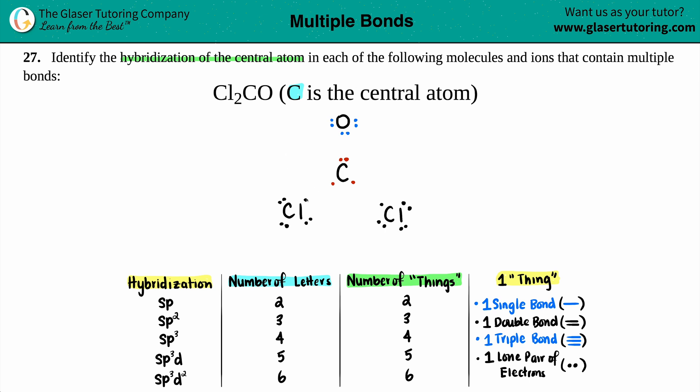We always single bond them first. So dot to dot, dot to dot, dot to dot, and just see if the outer elements have the octet. Chlorine's good. Two, four, six, eight. That's the octet rule. Got to have eight electrons. This chlorine's good. Two, four, six, eight. But then when we come over to this oxygen, two, four, six, seven.